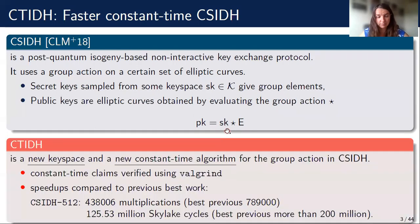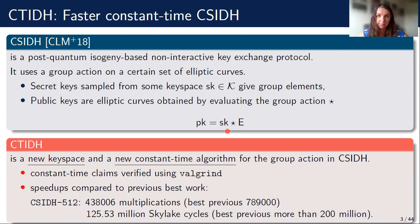What is CTIDE? CTIDE is a new key space and a new algorithm to compute the group action in CSIDH. Moreover, our new algorithm is constant time and we verify this claim using Valgrind. In addition, we obtain significant speedups as compared to the previous best constant time implementations.